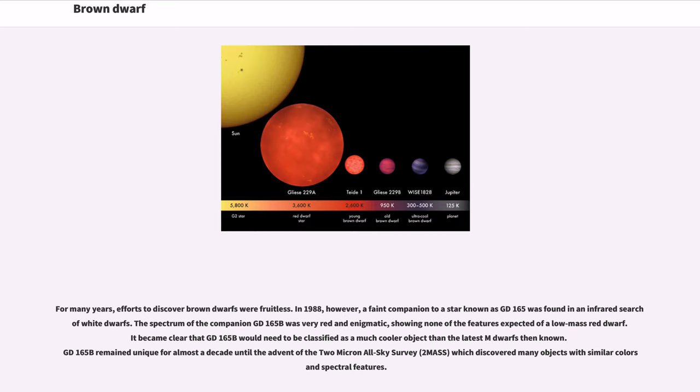For many years efforts to discover brown dwarfs were fruitless. In 1988, however, a faint companion to a star known as GD 165 was found in an infrared search of white dwarfs. The spectrum of the companion GD 165B was very red and enigmatic, showing none of the features expected of a low mass red dwarf. It became clear that GD 165B would need to be classified as a much cooler object than the latest M dwarfs then known.